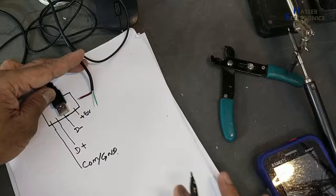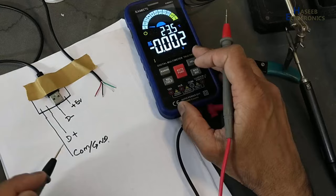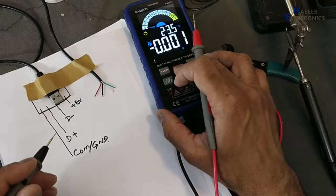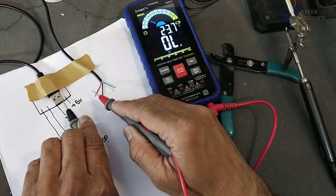One, two, three, four. Sometimes these colors are different, so that is the best way to check continuity. Connect to first connector here. Red is positive.